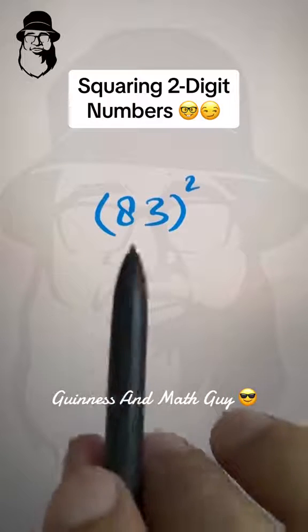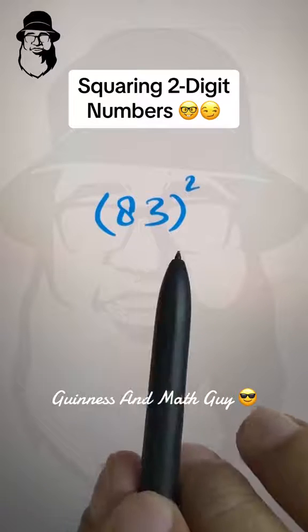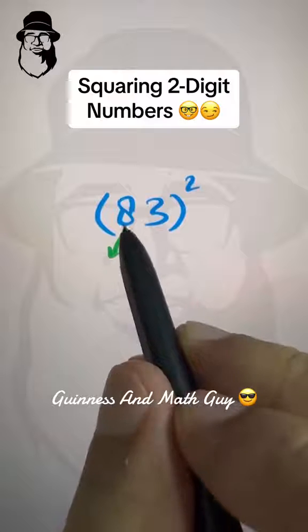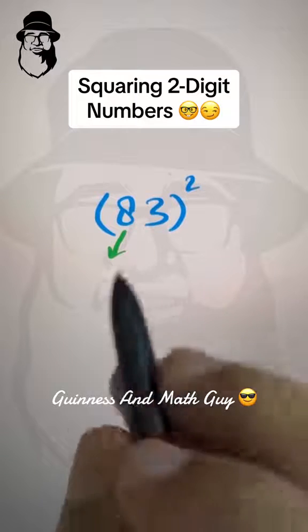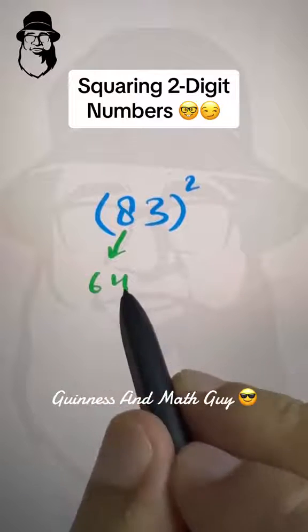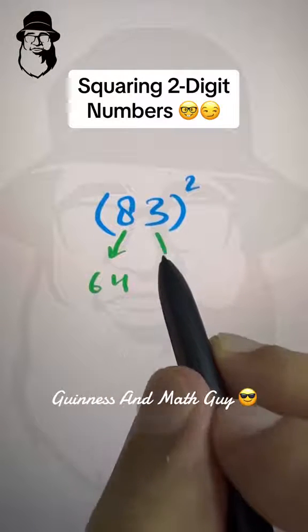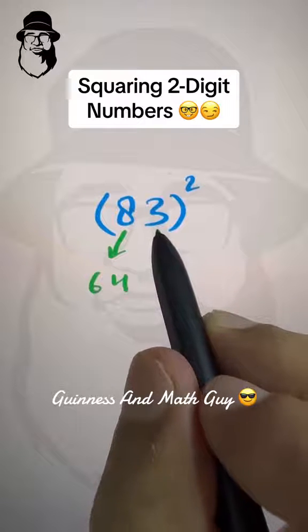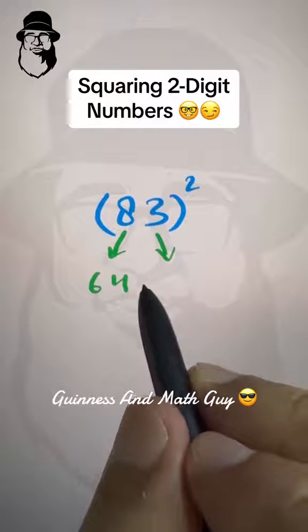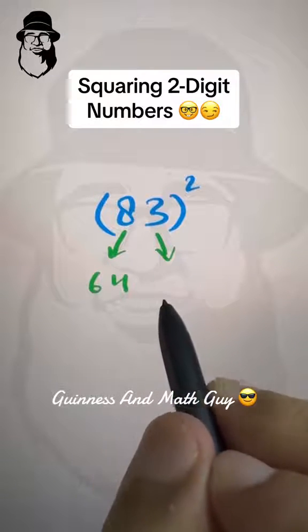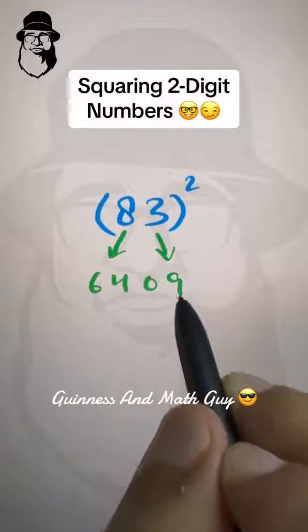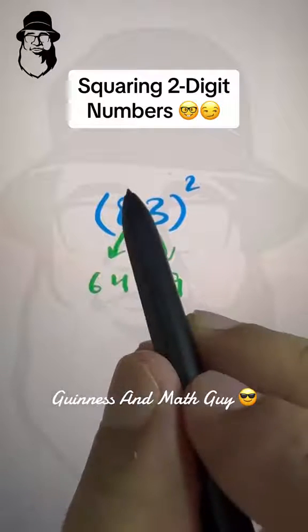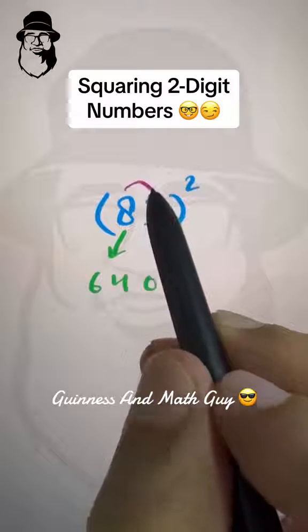With this method, you can square any two-digit number. First, the right square of the right digit: 8 squared is 64. Then the right square of the left digit: 3 squared is 9, but we have place for two digits, so we write 09. And then the last step is to multiply these two digits together.